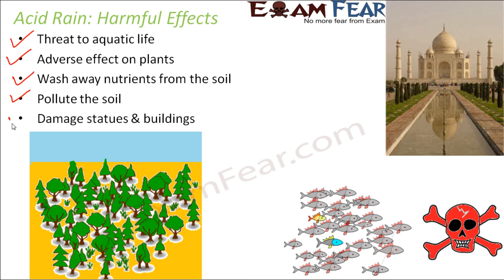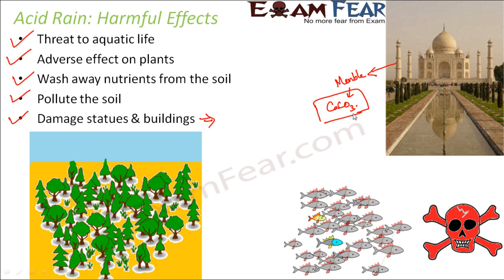Another important harmful effect of acid rain is damage to statues and buildings. The best example is the Taj Mahal in Agra, one of the seven wonders of the world. The acids cause faster erosion of rocks like limestone or sandstone. The Taj Mahal is made of marble, which is calcium carbonate — a form of limestone — and is therefore easily impacted by acid rain. The glow of the Taj has deteriorated significantly, with a blackish appearance now visible on the marble.